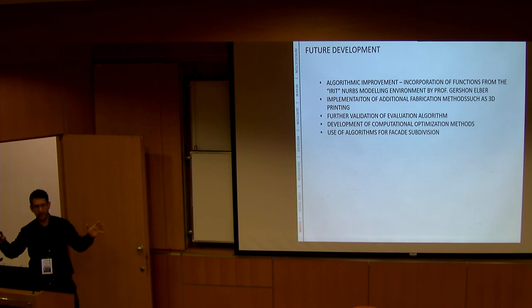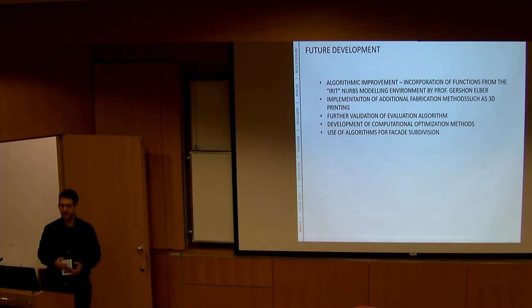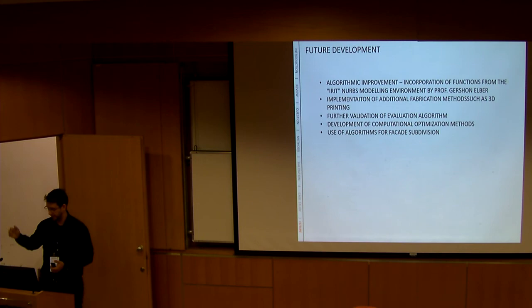And I also want to try to use my algorithms for facade subdivision. So you take an entire facade and say, if I have a three-axis CNC, I will divide it this way. If I'm using a hot wire, I will divide it that way. So that's it. I showed you how I want to connect architects, machines, and all the people around them using the computer. Thank you.